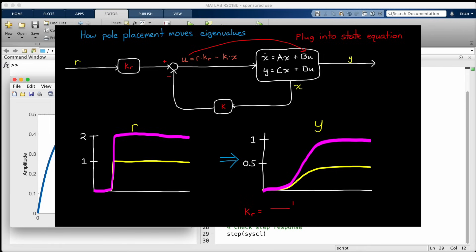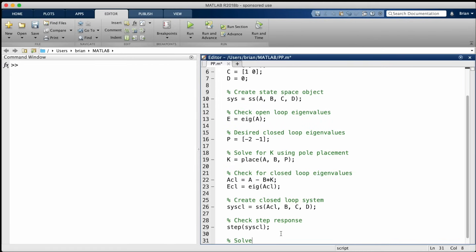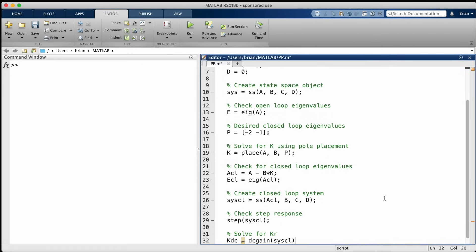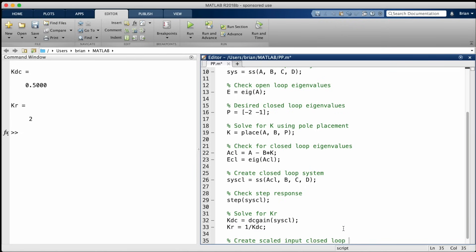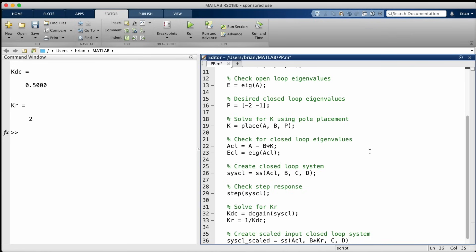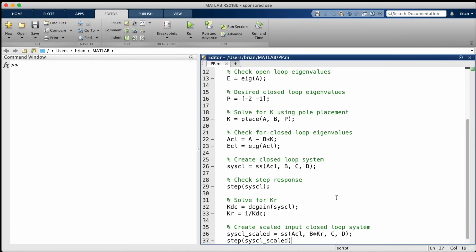And that's pretty much what we do. Well, we're not just doubling it. We scale the input by the inverse of the steady state value. In MATLAB we can do this by inverting the DC gain of the system. You can see that the DC gain is 0.5, and so the inverse is 2. Now we can rebuild our closed loop system by scaling the input by Kr, or by 2, and checking the step response. And no surprise, its steady state value is 1.